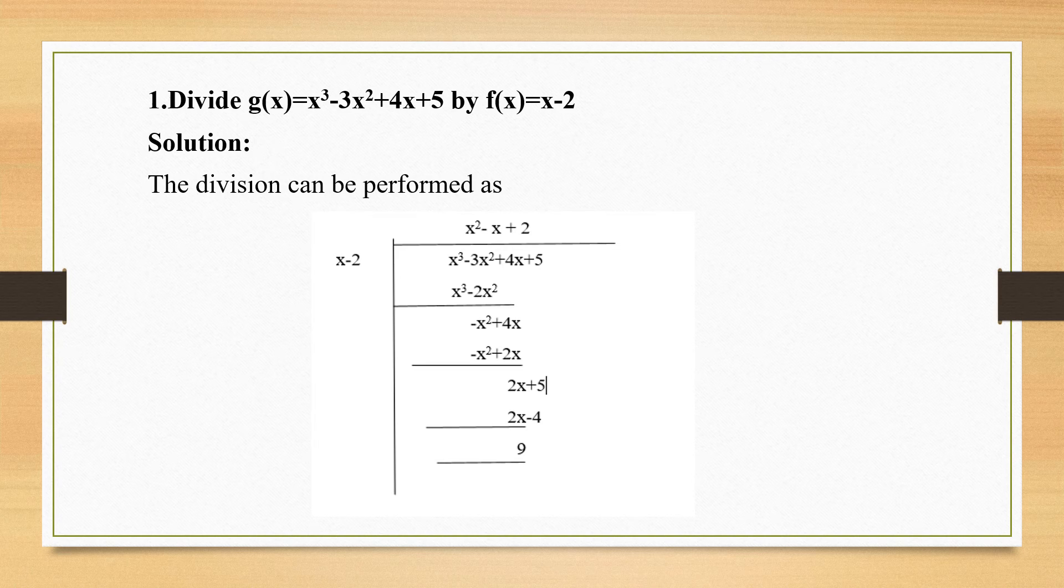So now what do I do? I change the sign here. So x cubed and x cubed will get cancelled, and if I change plus here, my answer will be minus x squared. Then bring down this 4x. So I am having minus x squared plus 4x.